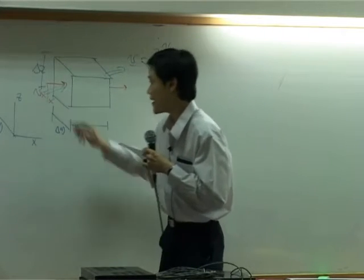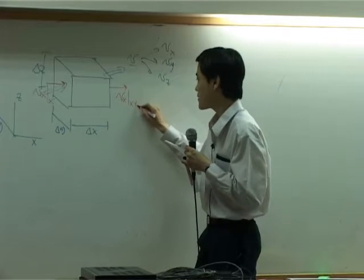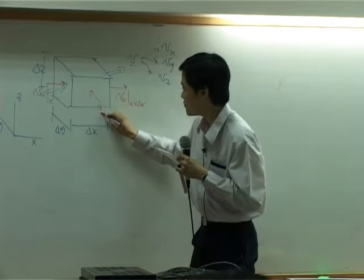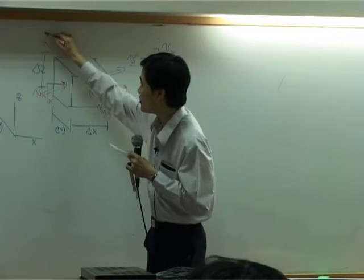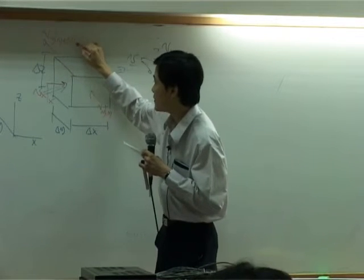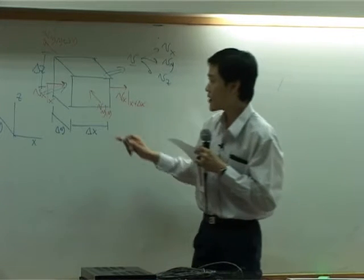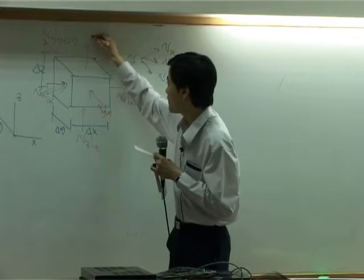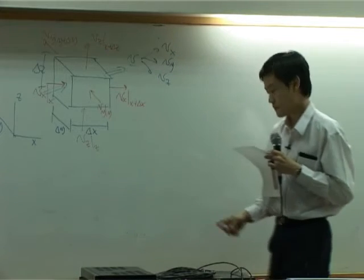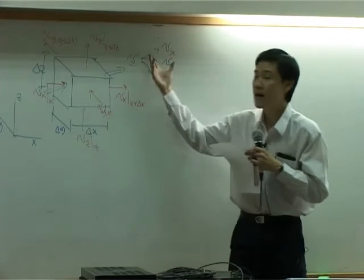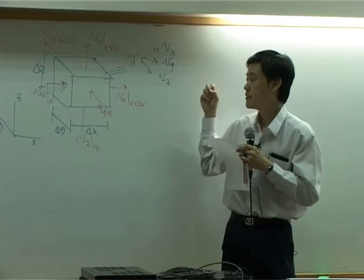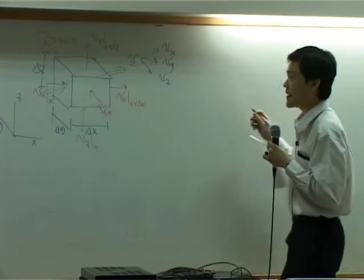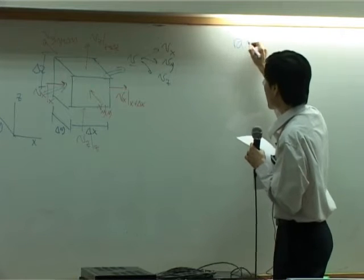vx is going in at x, and vx is going out at x plus delta x. In the y direction, vy goes in at y and goes out at y plus delta y. In the z direction, vz goes in at z and vz goes out at z plus delta z. So the combined velocity can be disassembled into three components. Then I can do a mass balance.